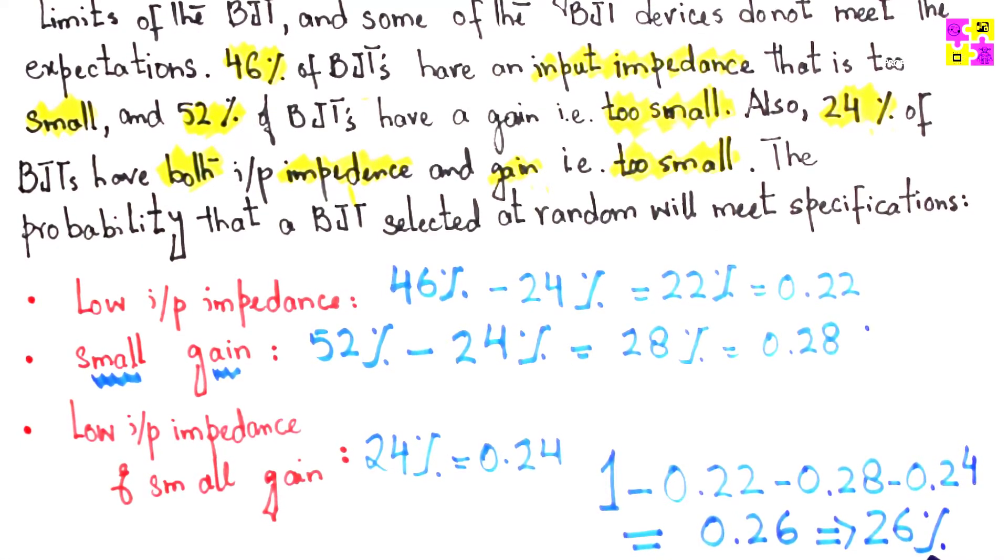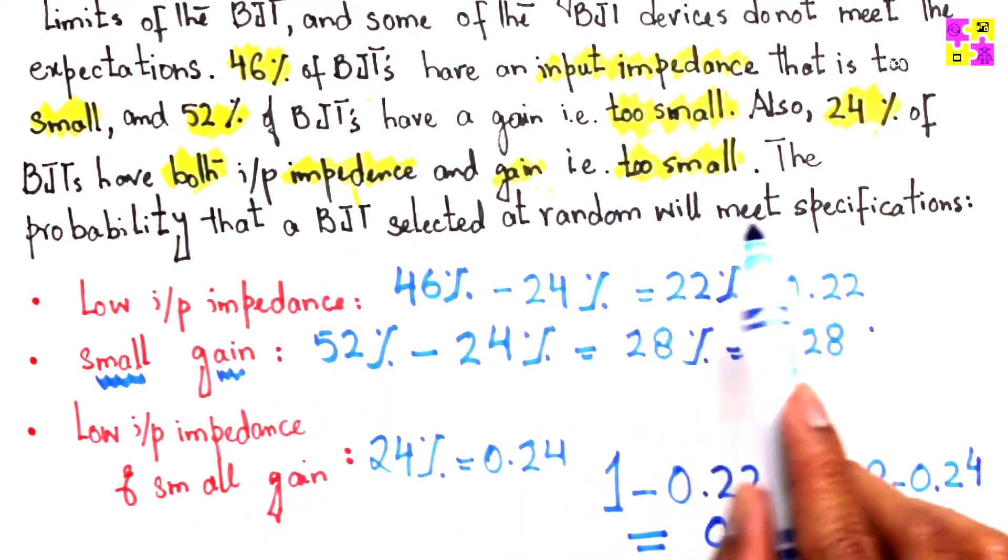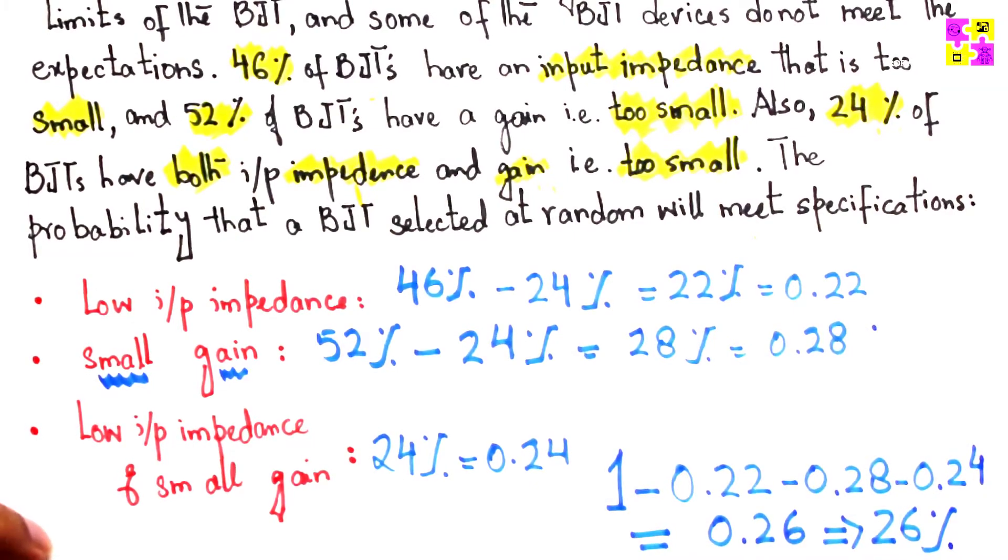In other words, the chances of picking up a random BJT: 26% chance that it is going to have a gain and impedance that meets the expectations or specifications.